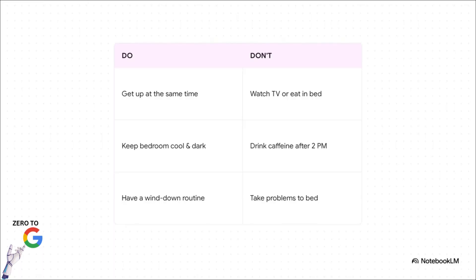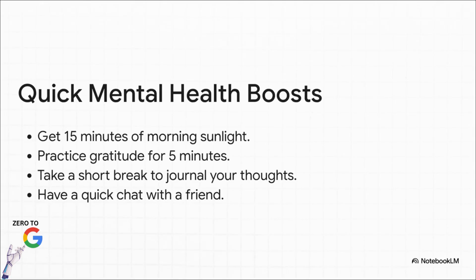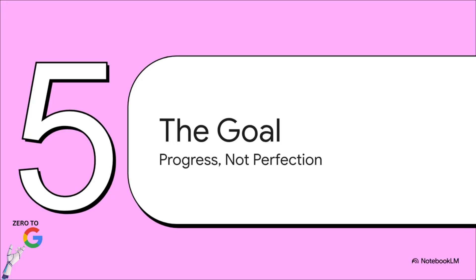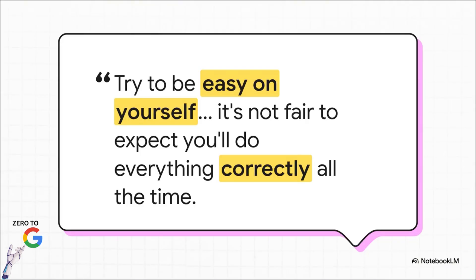Improving your sleep isn't about magically finding more hours — it's about improving the quality of the hours you already get. Simple rules like a consistent wake-up time or cutting off caffeine after 2 p.m. can make a massive difference. And that same 'start small' rule applies perfectly to mental health. You do not need a week-long silent retreat. Just 15 minutes of morning sunlight can literally lift your energy all day. A five-minute break to journal can reset your entire mood. Each one is a small, easy deposit into your mental wellness bank.